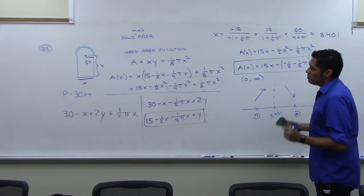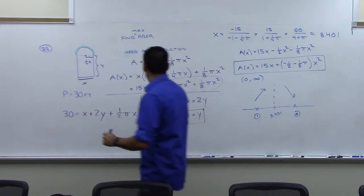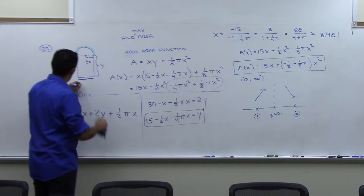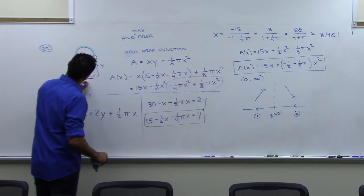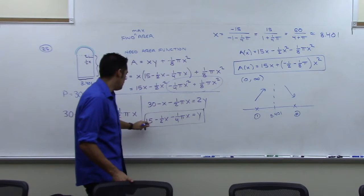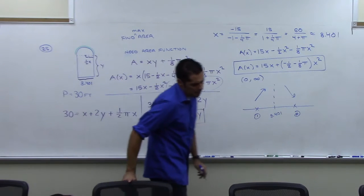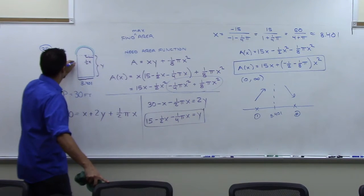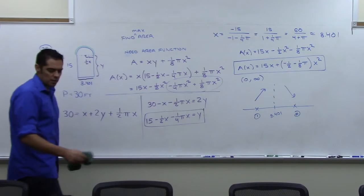So this means the dimensions are that your x needs to be 8.401. So this right here needs to be 8.401. And then to get your y, you plug that 8.401 into here. And if you do that, you should get that y is about 15. So this side right here should be 15.